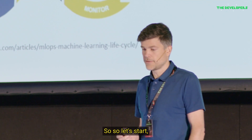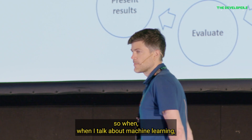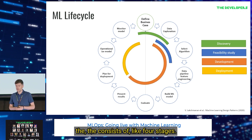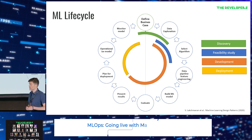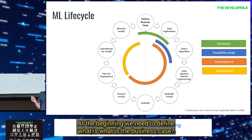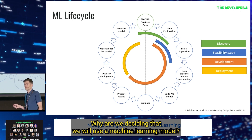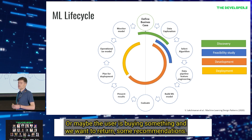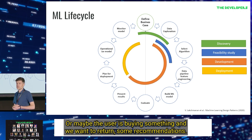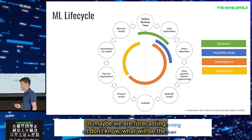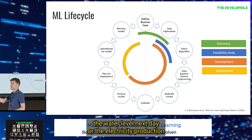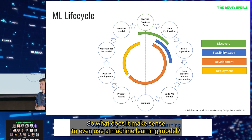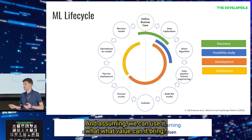When I talk about machine learning, I see it not as a waterfall process but as a loop with four stages. At the beginning, we need to define the business case — why are we deciding to use a machine learning model? Maybe a user uploads a picture and we need to figure out what's on it, or a user is buying something and we want to return recommendations, or maybe we're forecasting the water level the next day or electricity production for the next two hours. Why does it make sense to use a machine learning model? And assuming we can use it, what value can it bring?